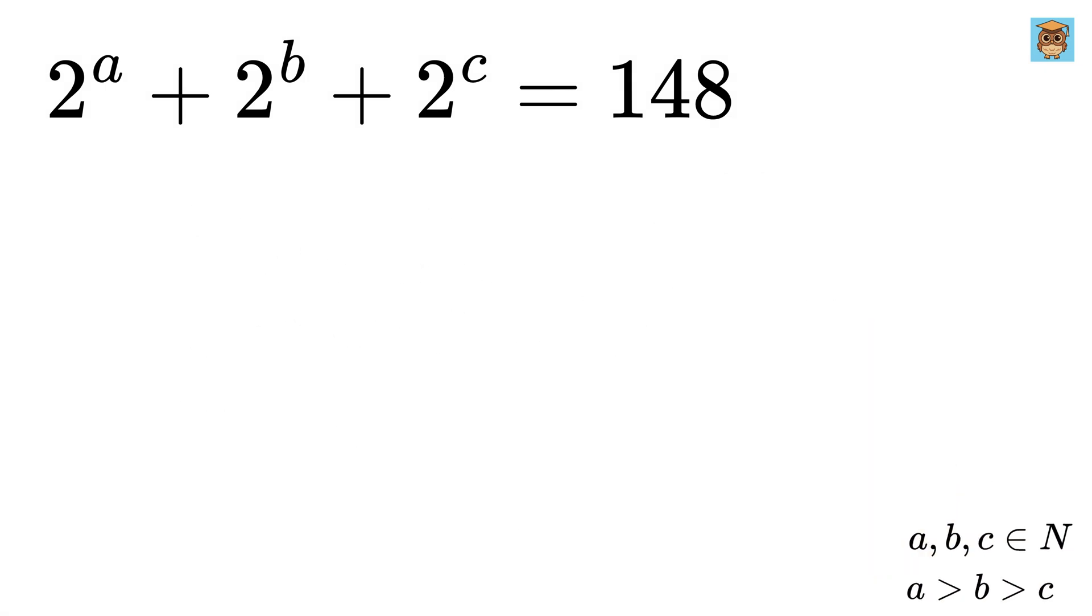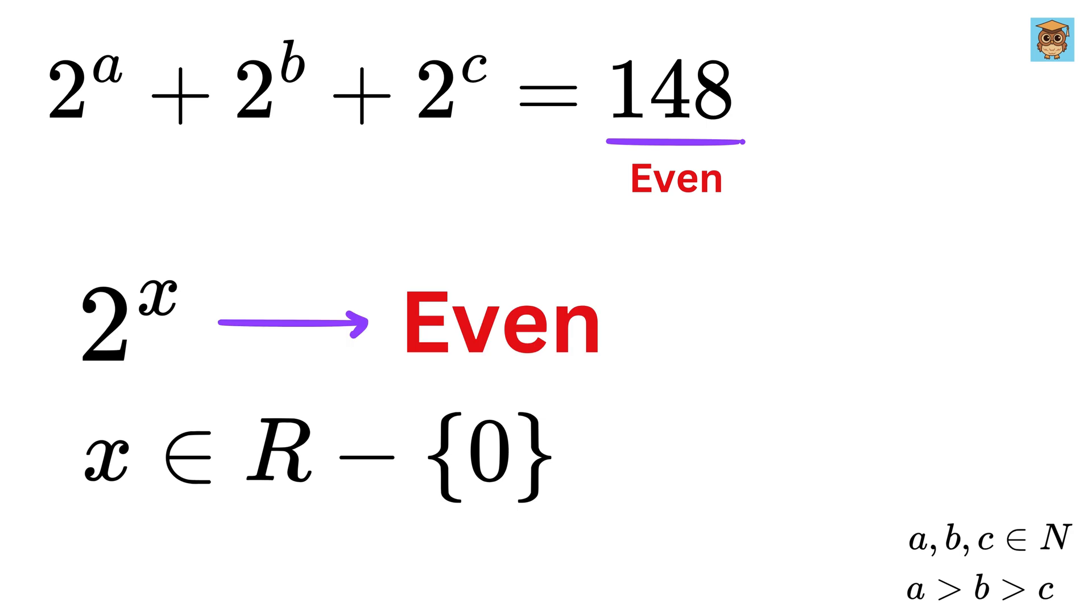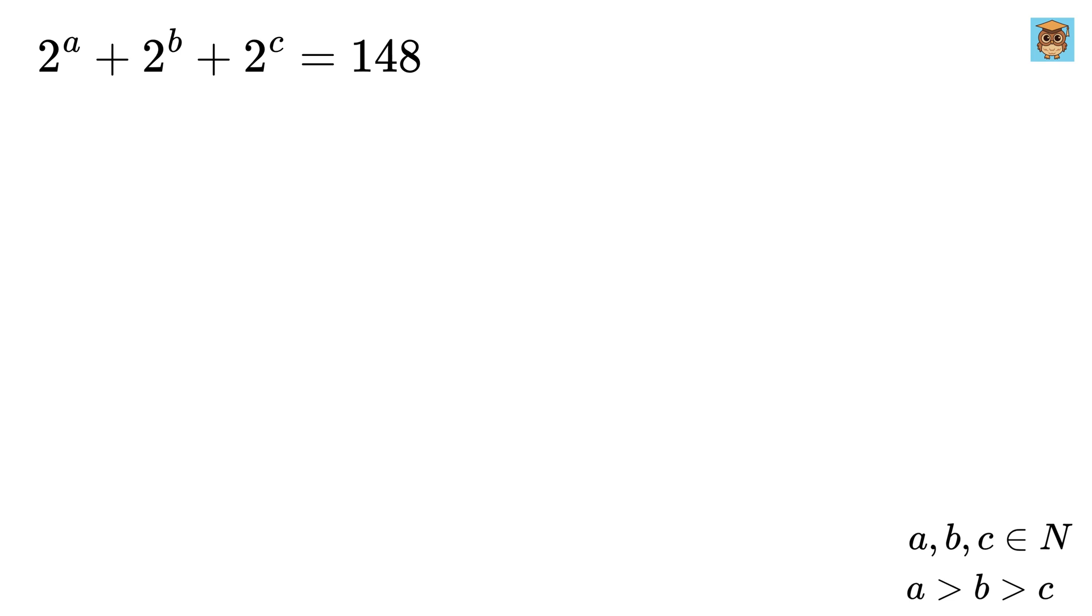We know that the number 148 is even. Also, we know that any power of 2, except 2 to the power of 0, is always even. Now, let us multiply and divide both sides of this equation with 2 raised to the power of C.